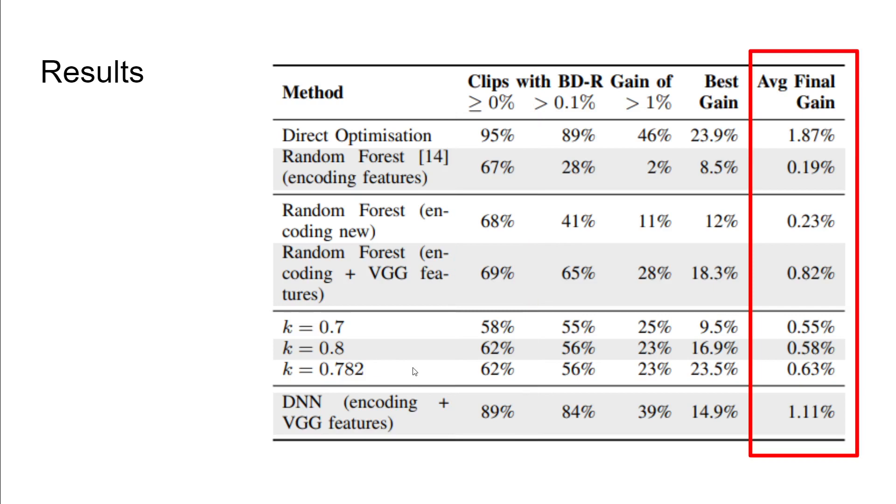The other metric is what we're calling our average final gain. This value is the average gain if we were to take any clip which performed worst and zero it out, because our system will choose whether to use the default encoder or our tweak to it. The worst performer will now be zero instead of a negative BD rate in performance. Across our corpus, the direct optimization technique had a 1.87% average final gain, and our deep learning technique had a 1.11% BD rate improvement, average final gain throughout.